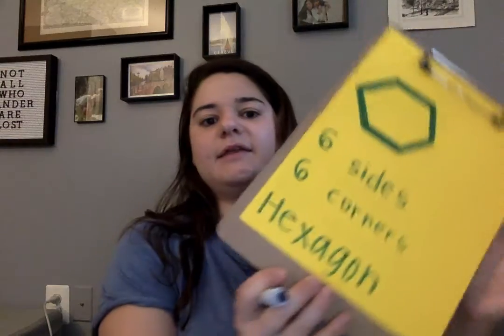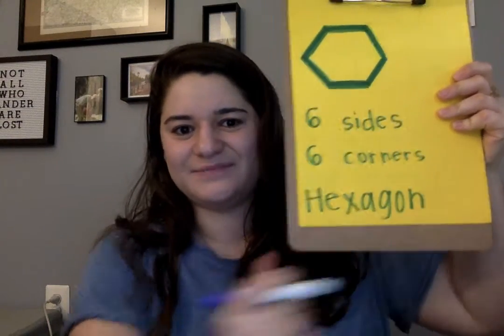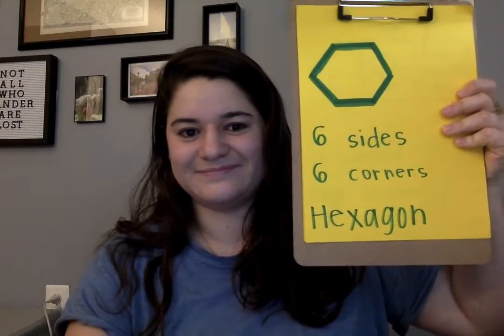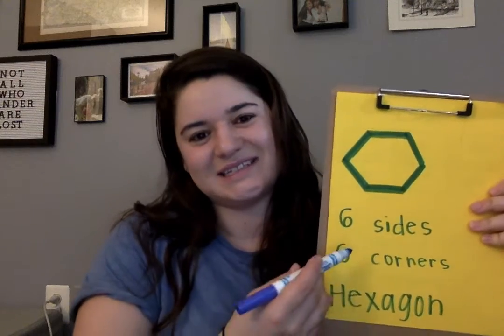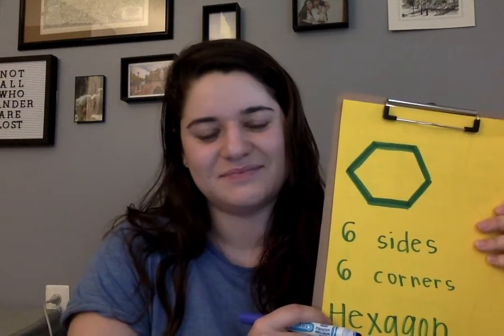The word hexagon looks like this: hexagon. A hexagon has six sides, six corners, and straight lines.